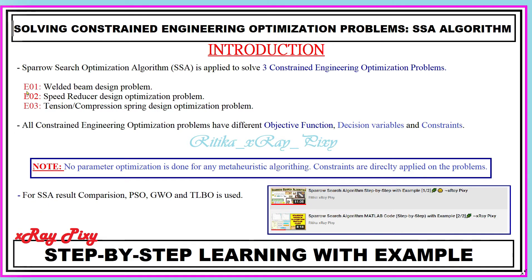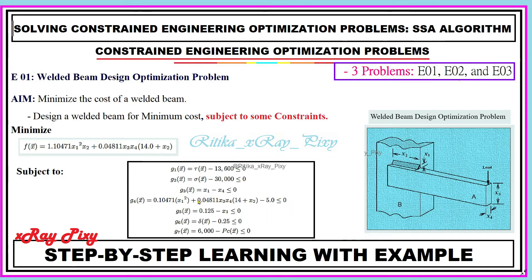We will compare the results obtained for each problem for the Sparrow Search Optimization Algorithm with PSO, GWO, and TLBO. The first problem is the welded beam design optimization problem, where our aim is to minimize the cost of a welded beam — we have to design a welded beam for minimum cost, and you can see we have different constraints.